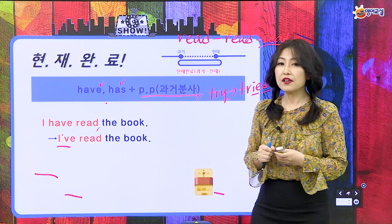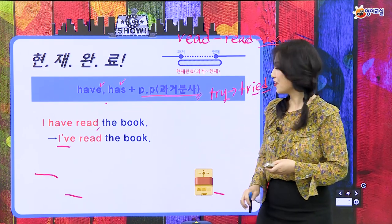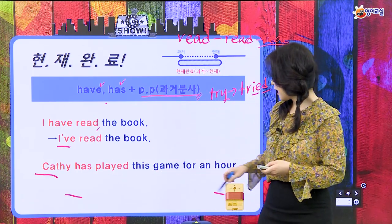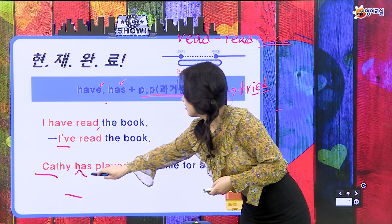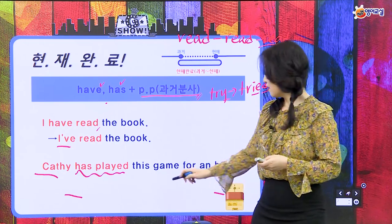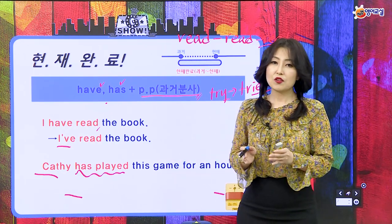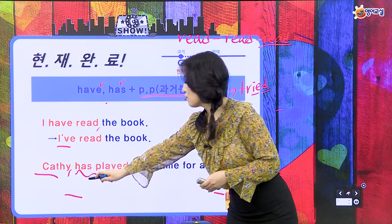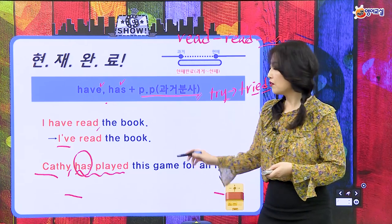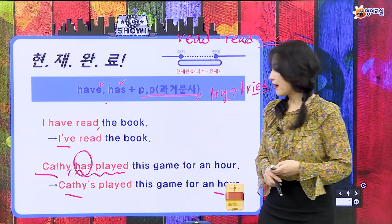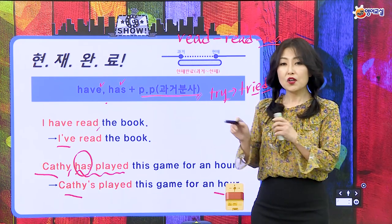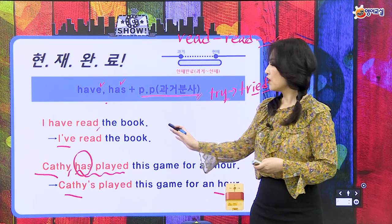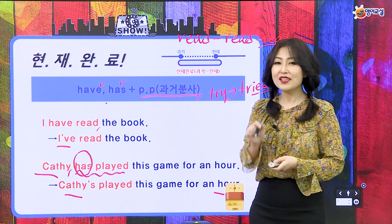듣기 평가 같은 거 할 때 I've 이렇게 나오면 I have구나 이렇게 이해하면 되는 거예요. Kathy has played this game for an hour. Kathy는 has played, 1시간 동안 이 게임을 하고 있다라는 얘기에요. Kathy's played this game for an hour로도 줄여 쓸 수 있어요. is만 줄여 쓸 수 있는 거 아니에요? is도 줄여 쓸 수 있고, have와 has도 현재 완료 시제에서는 줄여 쓸 수 있는 거예요.